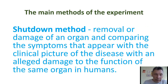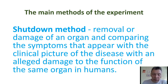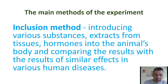Methods of experiment include the shutdown method — removal or damage of an organ and comparing the symptoms that appear with the clinical picture of the alleged damage to the function of the same organ in humans. The inclusion method involves introduction of various substances, extracts from tissues, and hormones into an animal's body, comparing results with similar effects in various human diseases.